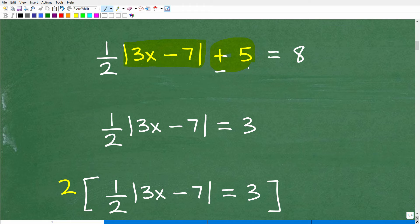So I'm not showing all the steps here because I'm assuming you're up to speed on your basic algebra. When we subtract 5 from both sides of the equation, we get one-half absolute value of 3x minus 7 is equal to a positive 3.